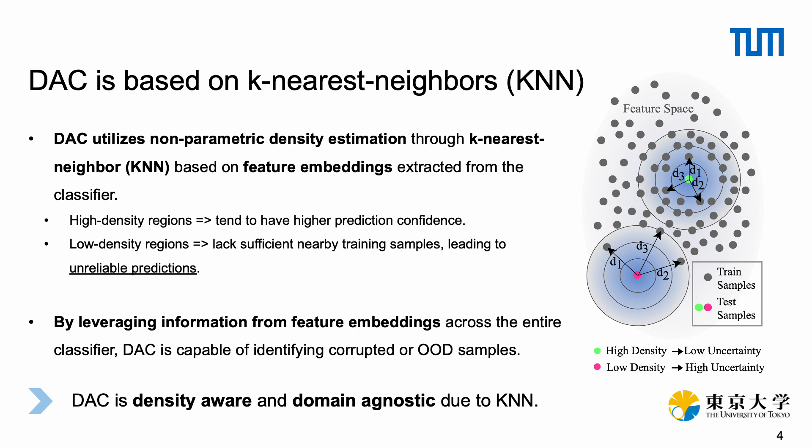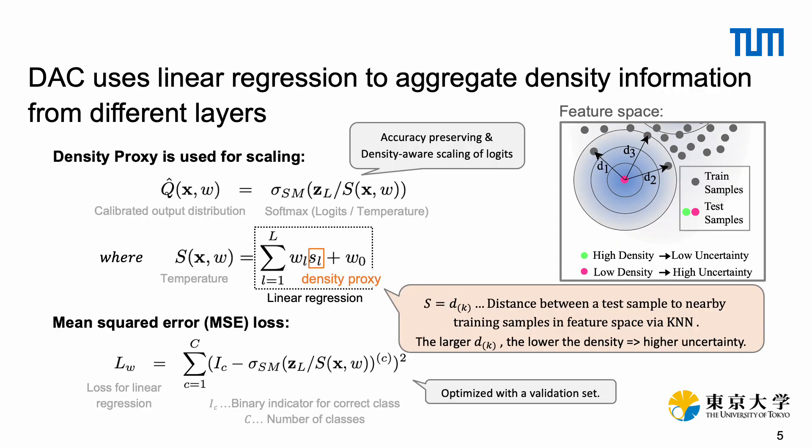In order to estimate such a proxy for each sample, we propose to utilize non-parametric density estimation using k-nearest neighbors based on feature embeddings extracted from the classifier. Due to our focus on KNN, DAC is density-aware and domain-agnostic.